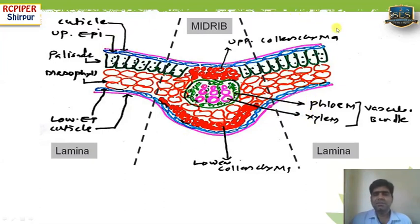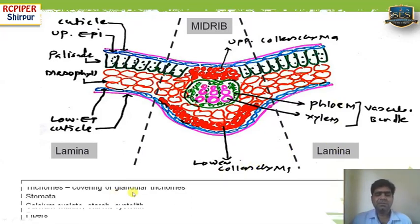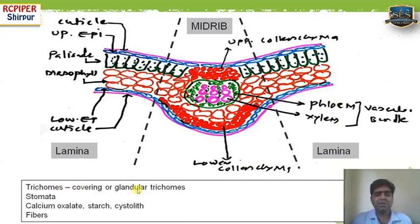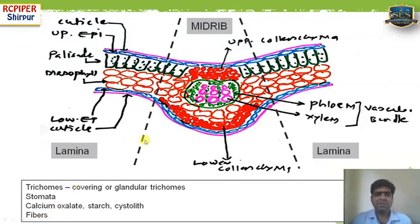These are the parts found present in every leaf under microscopy. The difference between different leaves lies in the presence of trichomes — either covering trichomes or glandular trichomes — and stomata, of which there are five types. There is also variation in the presence of different sizes and shapes of calcium oxalate, starch, and cystoliths. A cystolith is a calcium carbonate-containing cell. Additionally, fibers may be present — lignified fiber, non-lignified fiber, or pericyclic fibers — and these make the difference between different types of leaves.